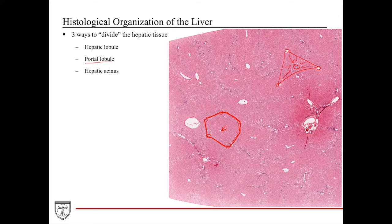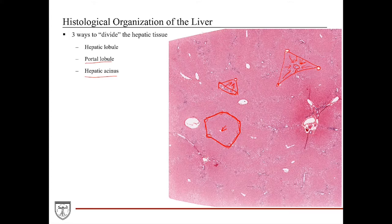The hepatic acinus focuses on the direction of blood flow and its content. It is a triangular structure with the central vein at the apex and the portal tract forming the base, with two portal triads at the remaining corners. Blood flows from the base of the triangle toward the apex through the sinusoids.